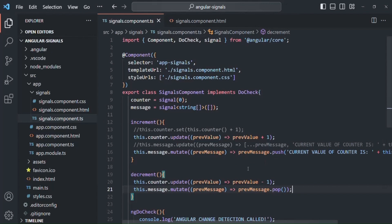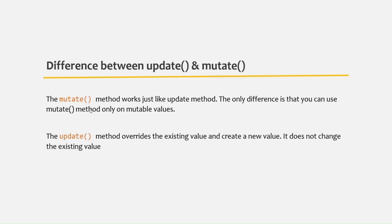I hope now you understand the difference between update method and mutate method, and when to use each. The mutate method works just like update method — the only difference is that we can use mutate method only on mutable values. When we use update method, it overrides the existing value and creates a new value; it does not change the existing value. We can use update method on a mutable type, but it will not mutate its value — instead it will create a new value from the existing value.